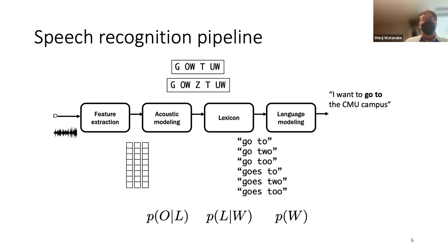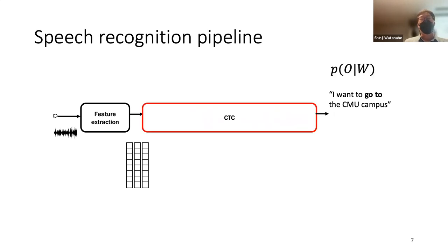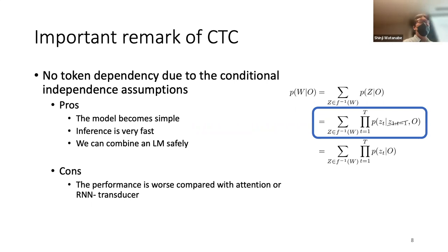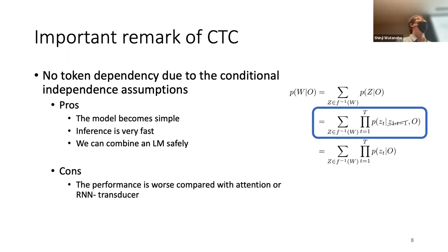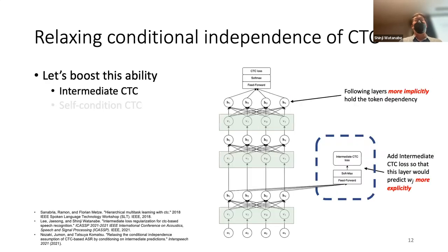If we have a speech recognition pipeline, CTC is one of the end-to-end methods replacing everything. Some of these are a review from last week's lecture, but they're important so I want to remark on them again. CTC does not have token-level dependency — it has a conditional independence assumption that is very different from other end-to-end ASR methods.